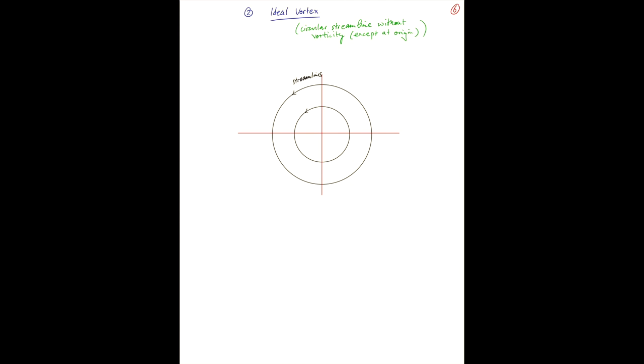But in this case, there's no vorticity except at the origin. And a velocity field that accounts for that is given by u equal to c, some constant, over r. So the angular component of your velocity field, this is u theta, u r.